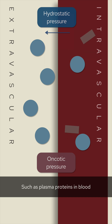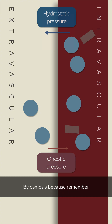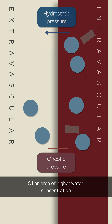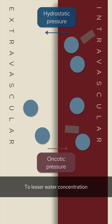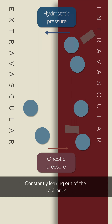such as plasma proteins in blood. This fluid containing proteins will attract fluid via osmosis, because fluid travels passively from an area of higher water concentration to lesser water concentration. This oncotic pressure opposes the hydrostatic pressure and stops fluid from constantly leaking out of the capillaries.